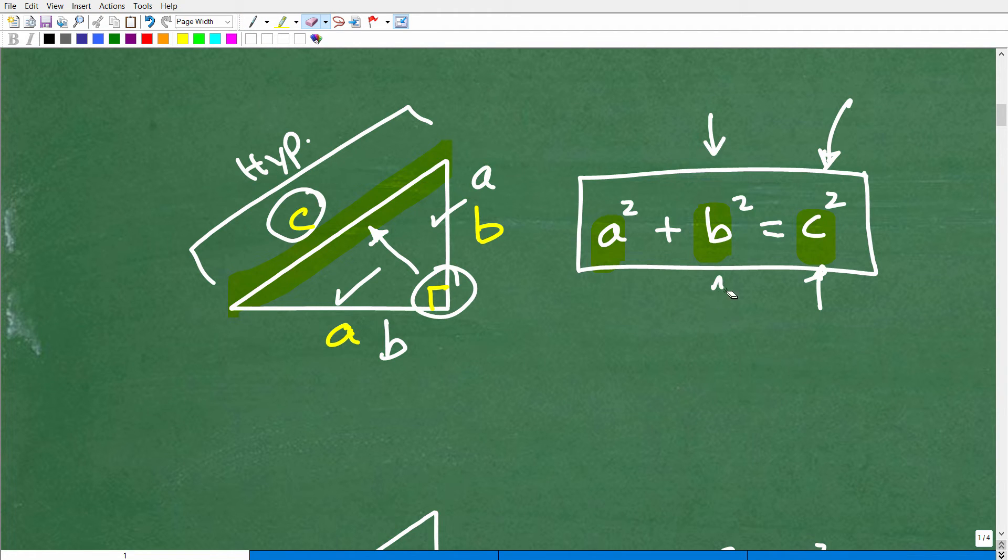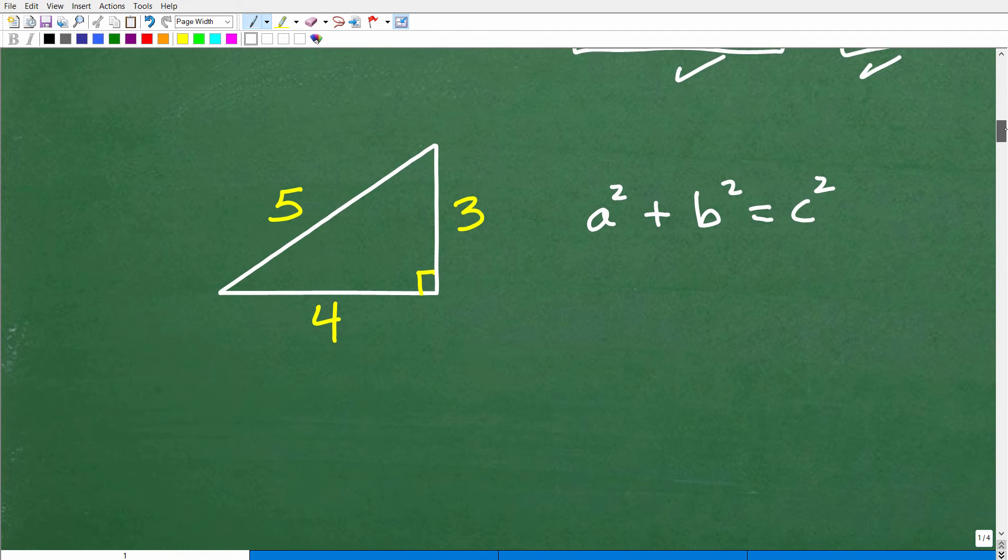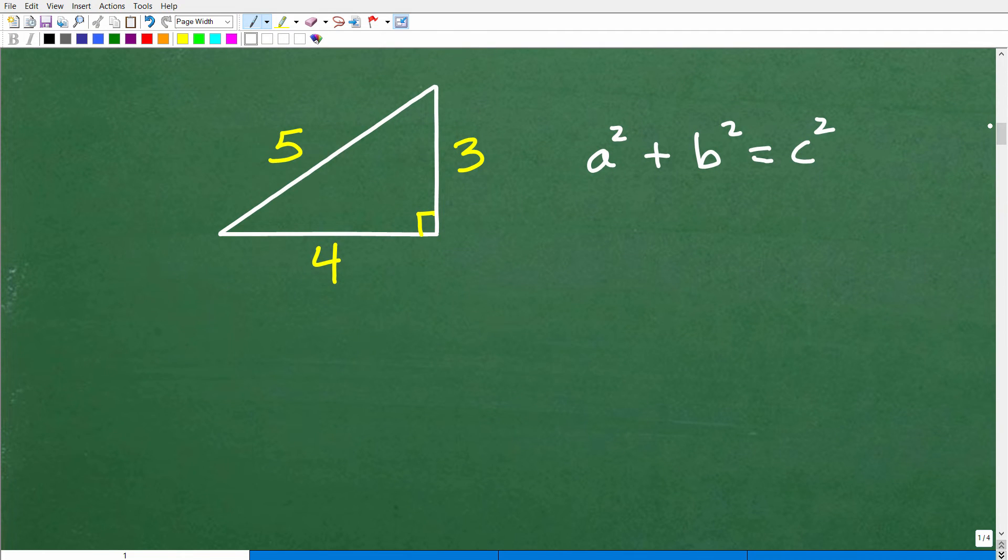So now we have a squared plus b squared equals c squared. So what we're saying is that the lengths A, B, and C, these represent the actual lengths of these sides. So if we take A, whatever that measure is right there, and we square it, and then we take B, whatever this measure is, and we square that, and then we add these up, it's going to be the same as if we take C and we square that. So when you have an actual right triangle, this relationship holds true. This is the Pythagorean theorem.